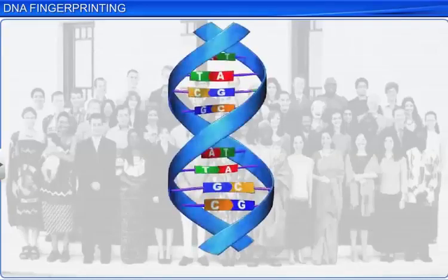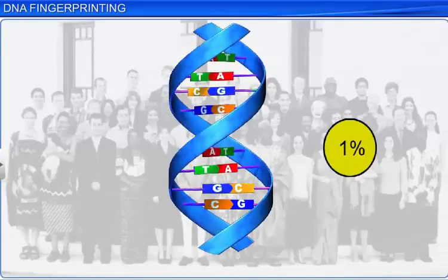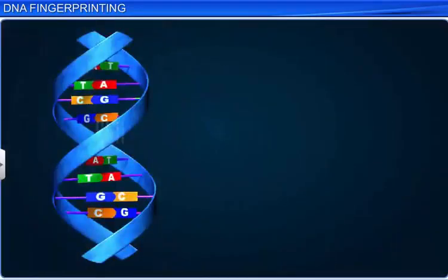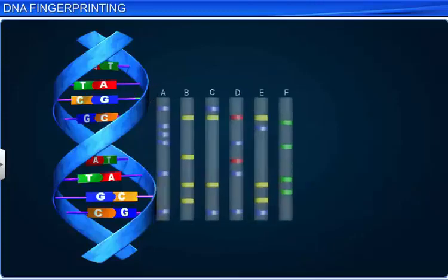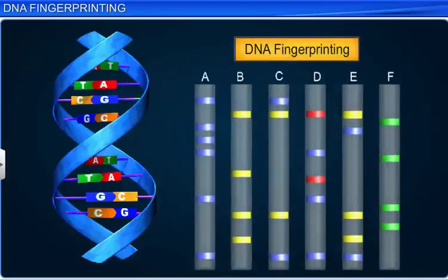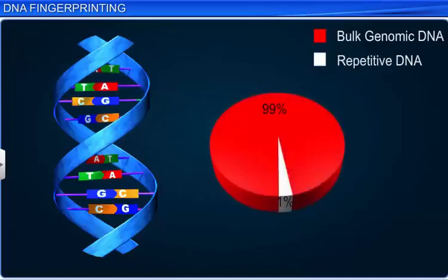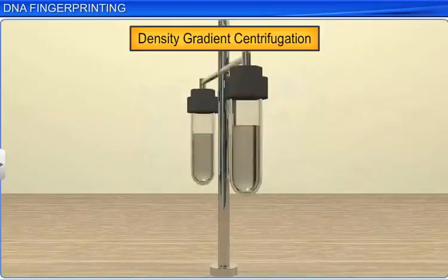The remaining 1% of DNA base sequences differ, and are present as a small stretch of repeated sequences, known as repetitive DNA. DNA fingerprinting identifies the differences in this region. To separate both genomic as well as repetitive DNA, the process of density gradient centrifugation is carried out.